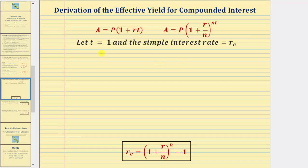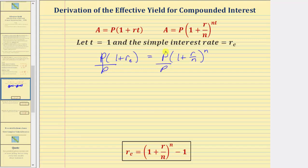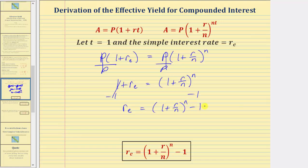The amount in the account paying simple interest would be P times the quantity one plus r sub e. We'll let t equal one in both formulas to represent one year, and we'll let the simple interest rate r be equal to r sub e because it would be the effective yield. So now if we solve this equation for r sub e, we'll have our effective yield formula for compound interest. Dividing both sides by P gives one plus r sub e equals the quantity one plus r divided by n, raised to the power of n. Subtracting one from both sides gives r sub e equals the quantity one plus r divided by n, raised to the power of n, minus one — which is our effective yield formula for compounded interest.